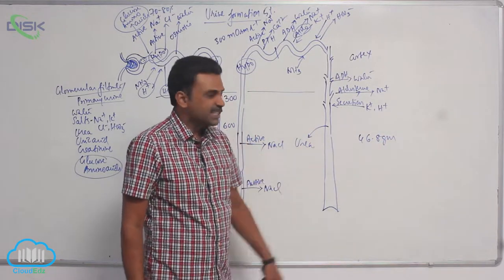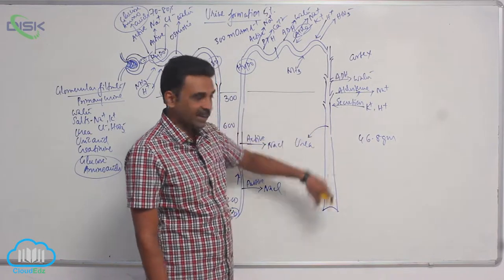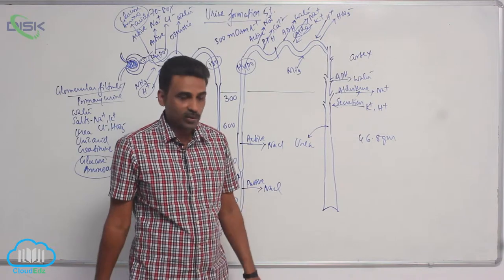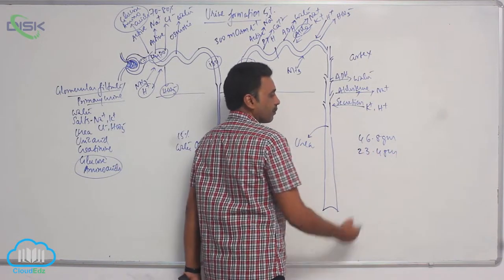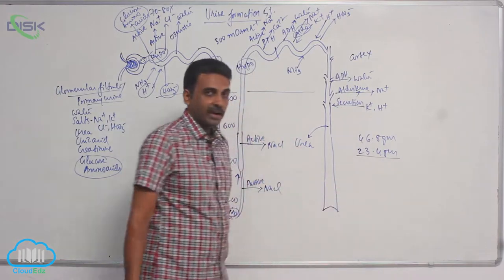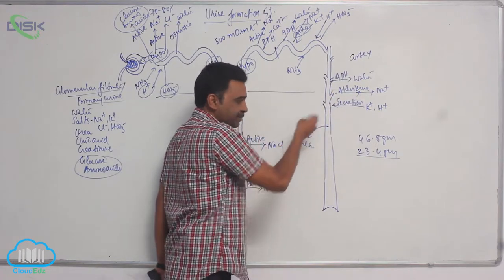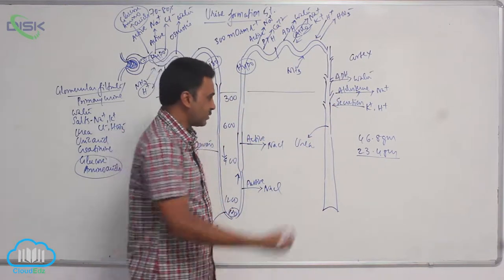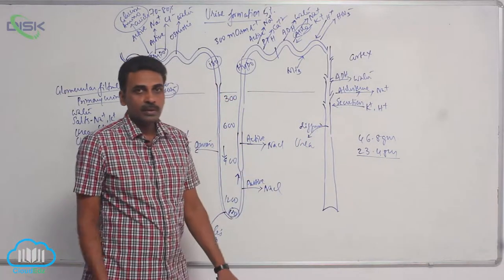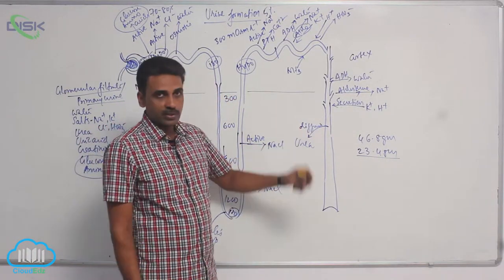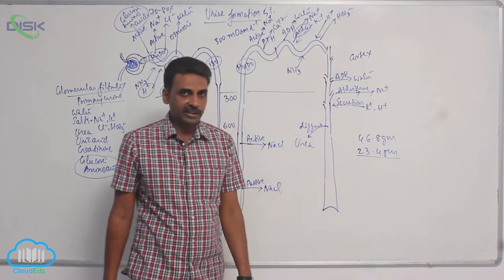Out of 46.8 grams of urea which is filtered, half of that—around 23 grams—diffuses outside passively by diffusion. So a small quantity diffused outside, but much of the urea is still there inside the collecting duct.